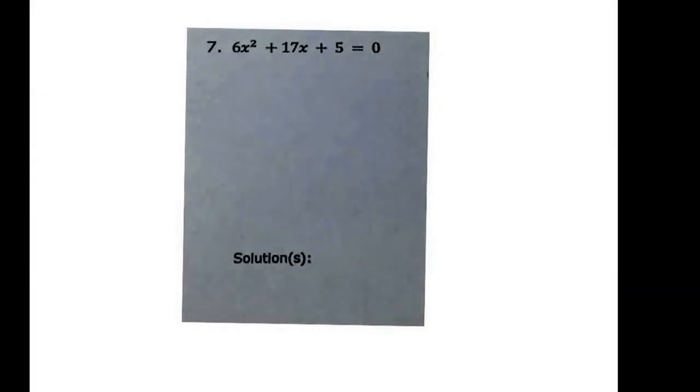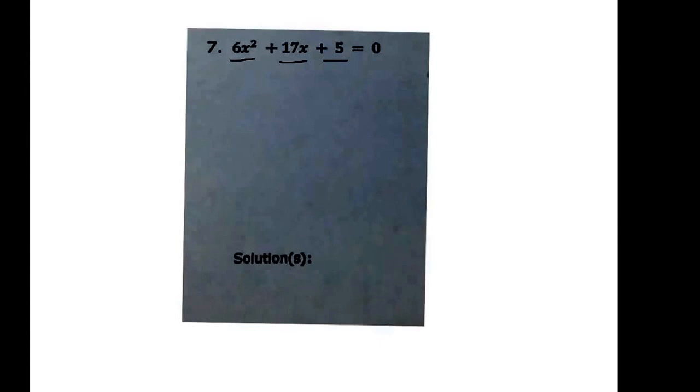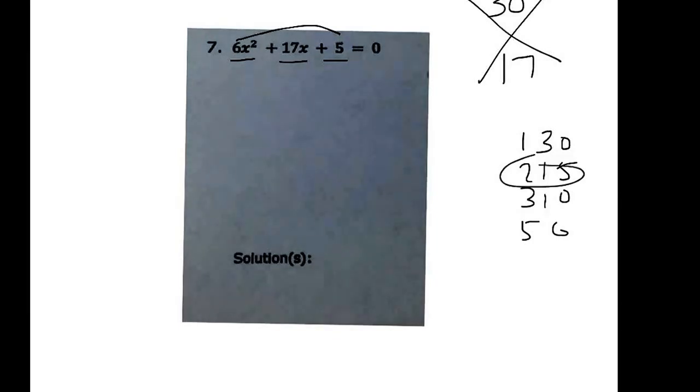The next one we have to do our factoring so we look at 6, 17, and 5 they don't have anything in common, so we start. That's 30 to make 17. Our factors of 30 are 1 and 30, 2 and 15, 3 and 10, 5 and 6 and so this is the set that makes 17.